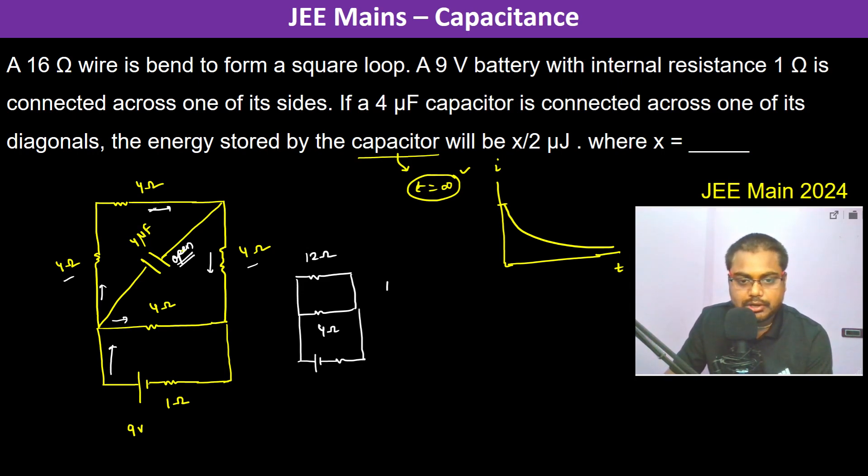It's 12 ohms, then it's 4 ohms, and here the battery is there. So 12 into 4 divided by 12 plus 4, which is 16, so this is 3 ohm. 3 ohm and this is 1 ohm, so therefore 4 ohm total resistance.